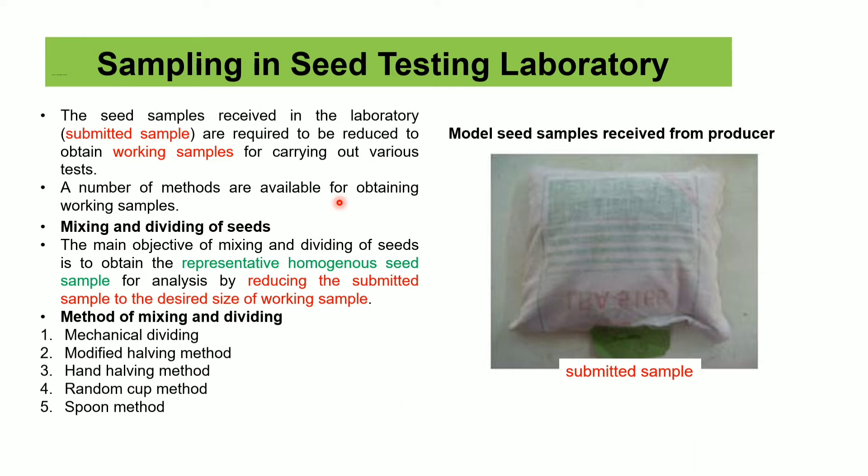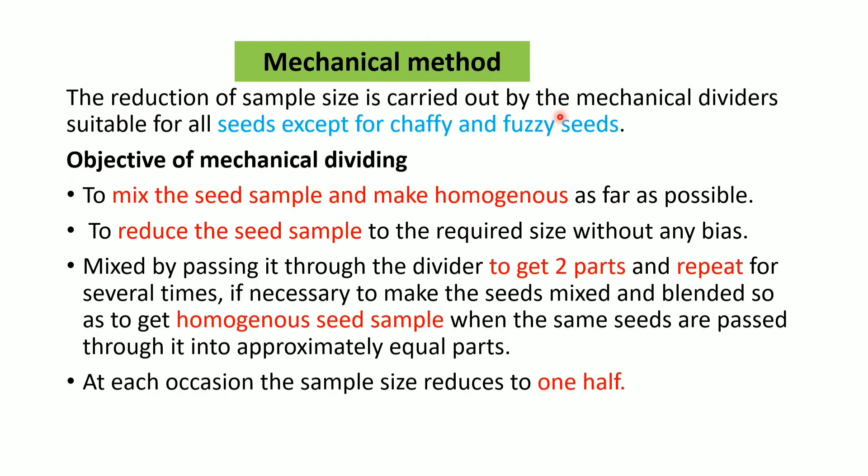The mechanical method reduces the sample size to half of the submitted sample and is not usually used for chaffy and fuzzy seeds. The objectives of the mechanical dividing method are to mix the seed samples and make them as homogeneous as possible, and to reduce the seed size to half without any bias. Mixing and passing through the divider should be done in at least two passes, and if necessary the process should be conducted twice or more until a homogeneous seed sample is obtained.